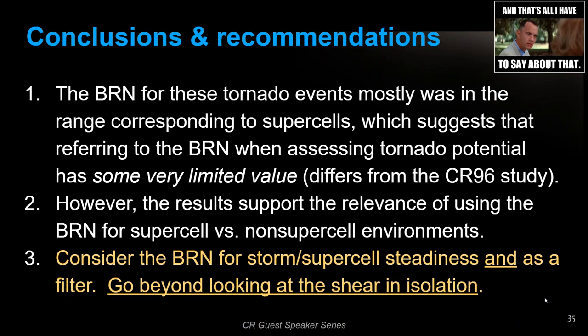Question from Phil Schumacher: do you think there are advantages to using BRN over other composites like the supercell composite parameter (SCP)? I haven't really done that comparison. The BRN is very specific toward looking at that balance of CAPE and shear, while the supercell composite parameter not only helps identify supercell-type environments but the larger it gets, it's basically telling you it could be a more potent environment. That would be an interesting thing to study — I just have not looked at that.